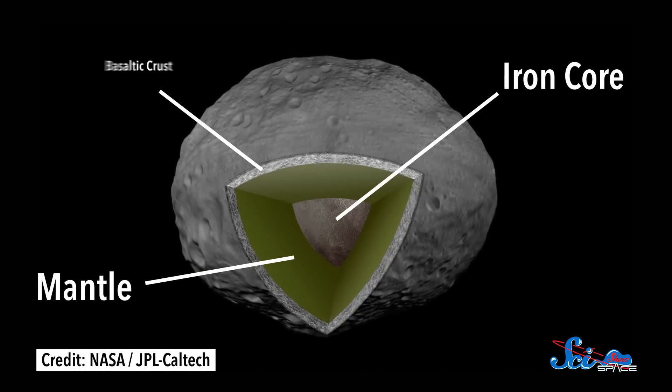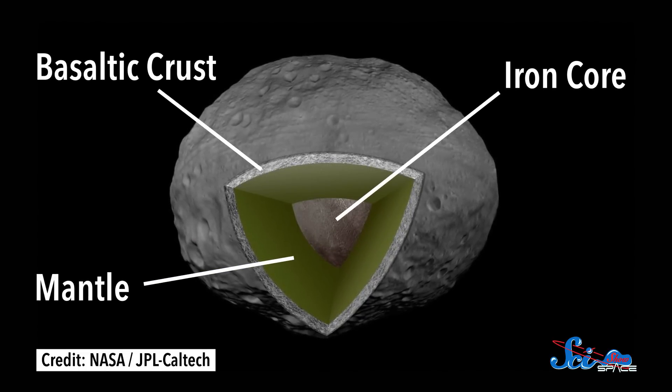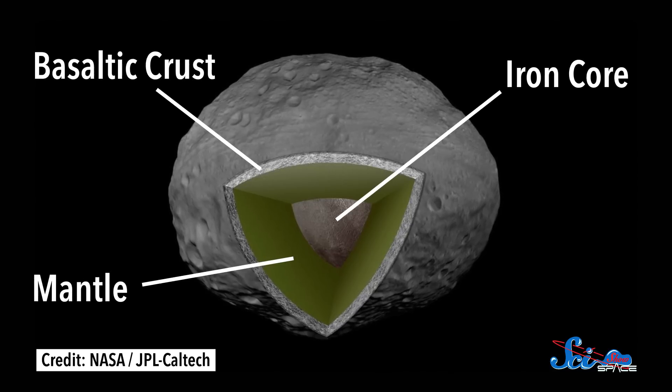Vesta is unusual for an asteroid, because it's a lot like a mini-planet. It has a liquid metal core, a mantle, and a crust made out of lava, which we were able to figure out using instruments like Hubble. We haven't really seen an asteroid like that anywhere else in the solar system.